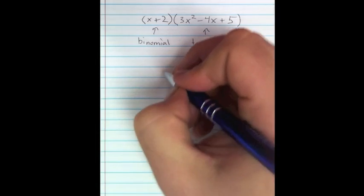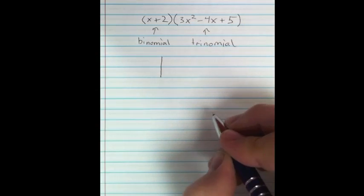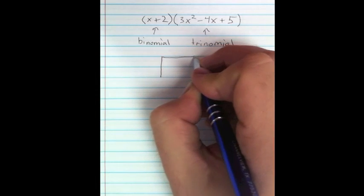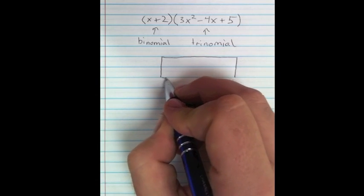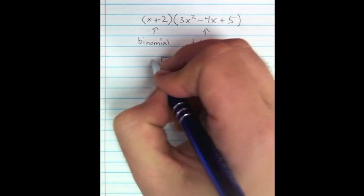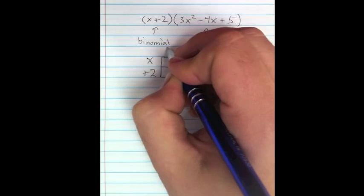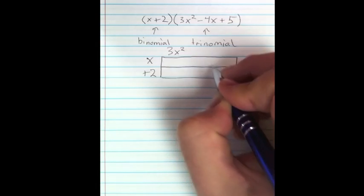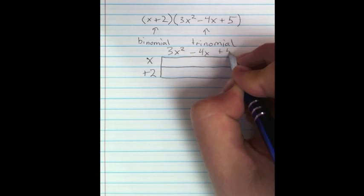So we're going to have a box that is two boxes high by three boxes wide, because we have a binomial times a trinomial. On the left side of the box, we're going to put an x and a plus 2. And on the top, we're going to put a 3x squared, minus a 4x, and plus a 5.